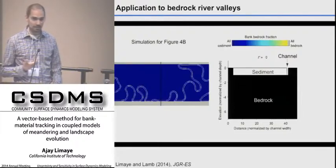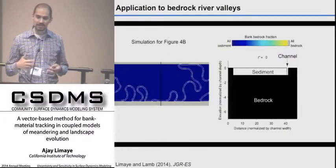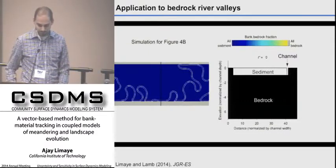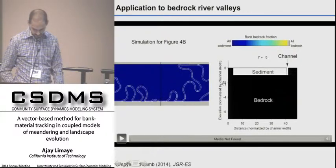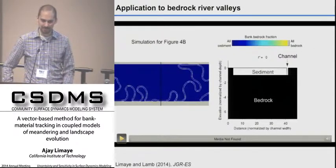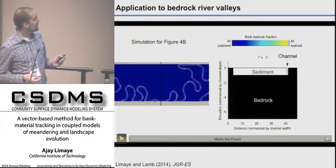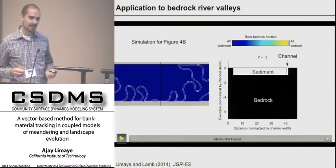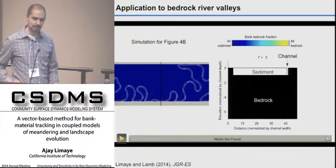A cross-section running through the model domain shows the contact between sediment and bedrock in the landscape, with the channel visible at the margin. As the simulation advances, the channel dances back and forth across the model domain. Running this forward in time, we can reproduce many features of bedrock river valleys just by accounting for an evolving bank strength in the landscape, even without other perturbations driven by changes in vertical incision rates.